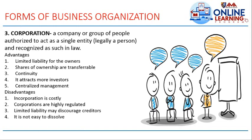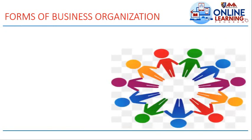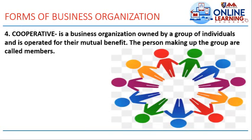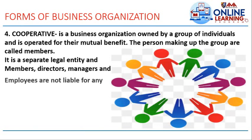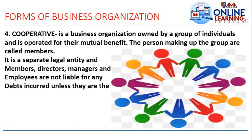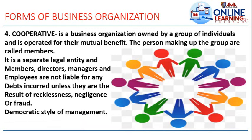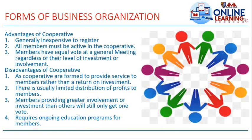The fourth form of business organization is cooperative — a business organization owned by a group of individuals and operated for their mutual benefit. The persons making up the group are called members. It is a separate legal entity, and members, directors, managers, and employees are not liable for any debt incurred unless it results from recklessness, negligence, or fraud. It has a democratic style of management.